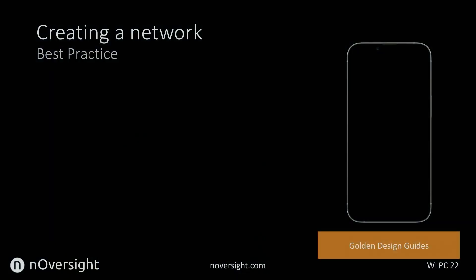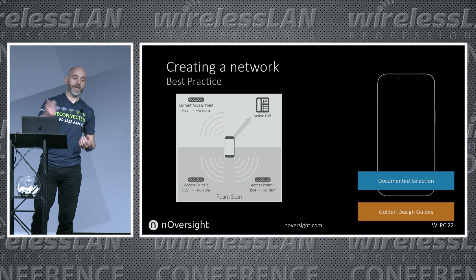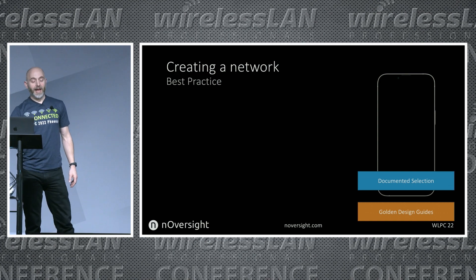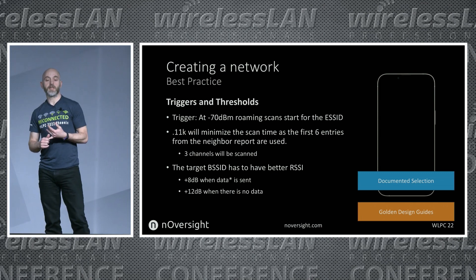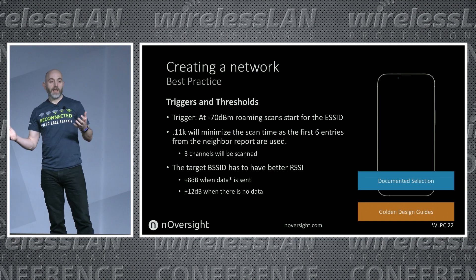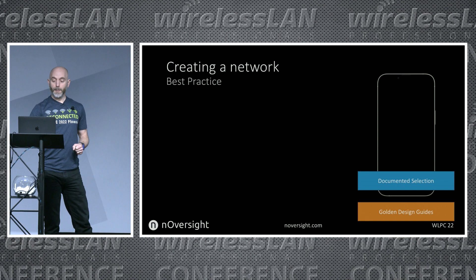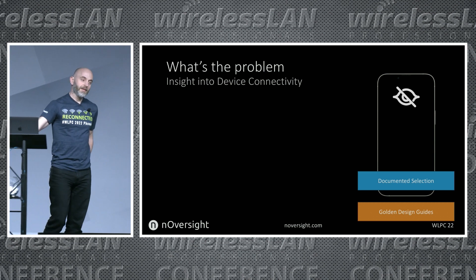When you're creating a network there are golden design guides — I'm not going to go there, you guys know tons more than I do. And even within the device you've got documented device selection. This is out of the Apple enterprise best practices: it recommends how to set up a network so that an Apple device will best use it. It talks about trigger levels to start roaming, how 802.11k benefits you, and what your cell size needs to look like depending on whether data is moving or not.